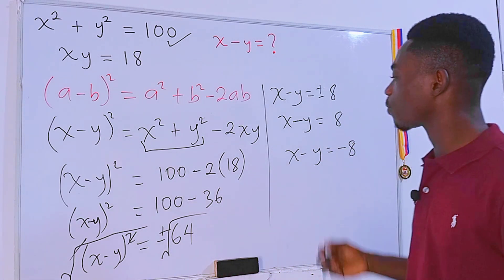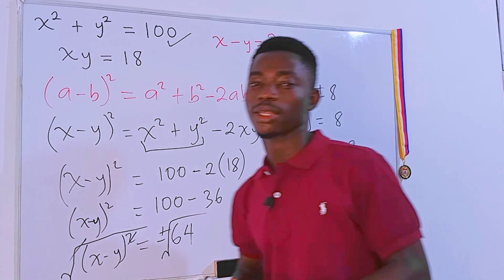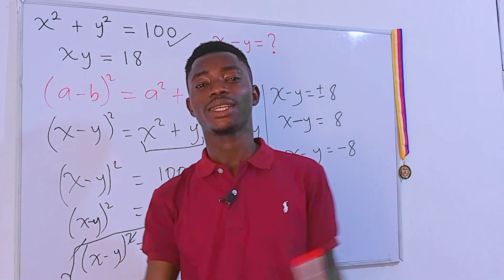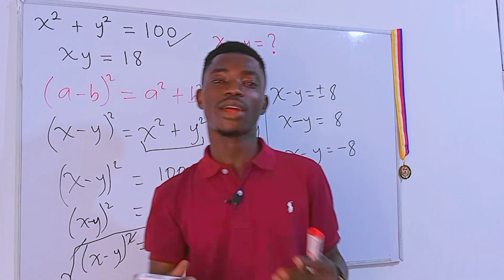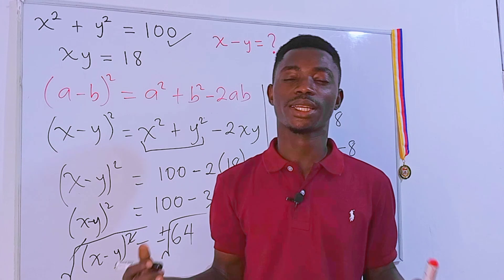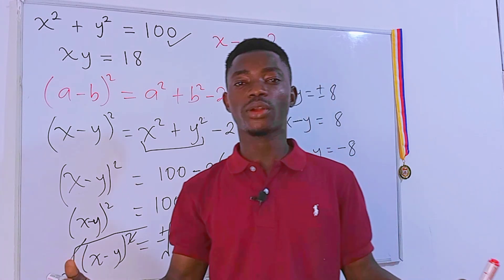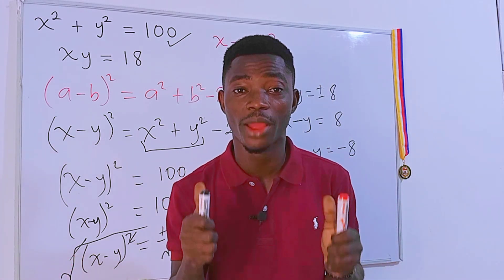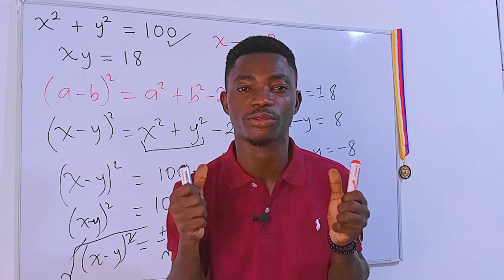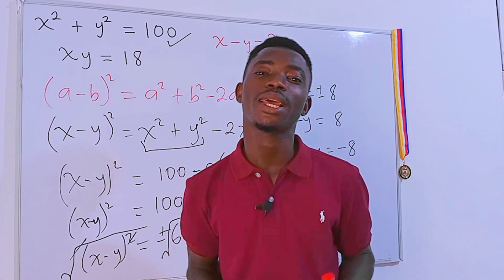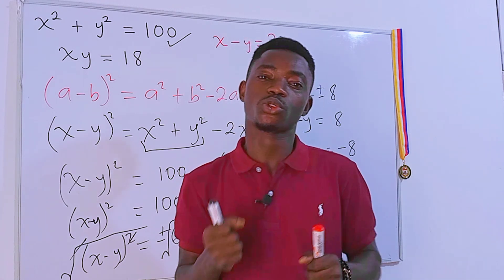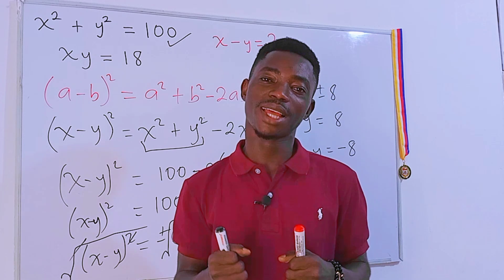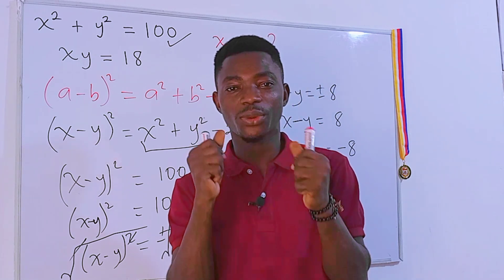So x minus y is equal to 8, or x minus y is equal to negative 8. We have two solutions for x minus y: plus or minus 8. That's pretty much it. I hope you found the video useful — please give me a thumbs up, subscribe, and share with your friends. See you in the next video!